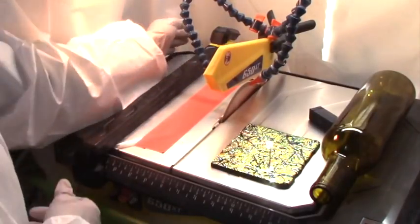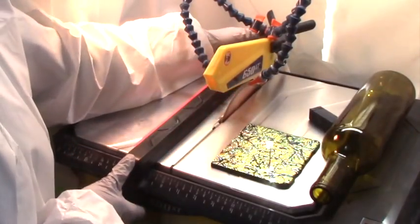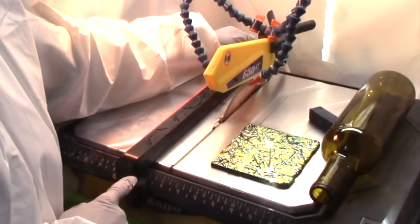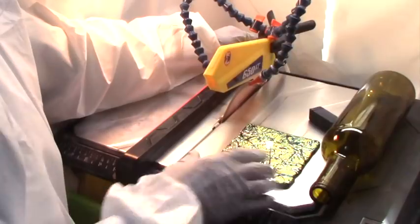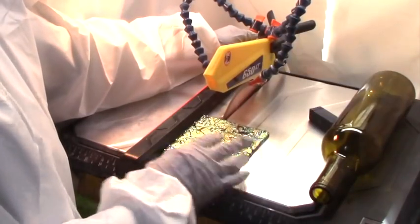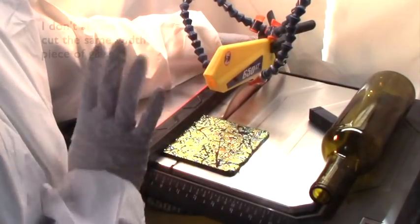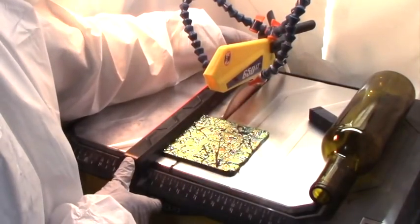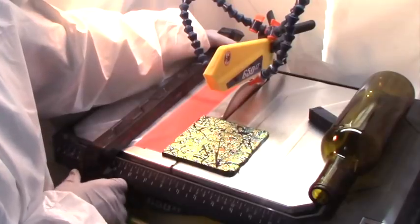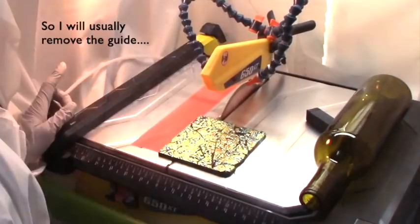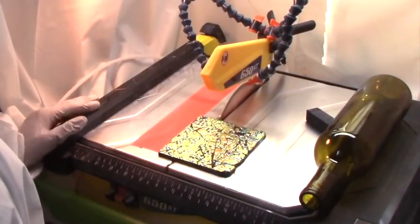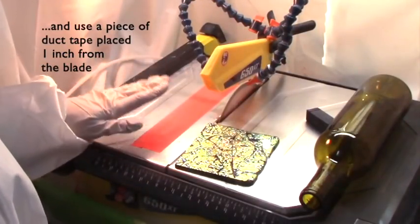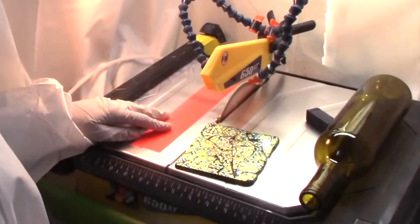The next thing about this saw is it comes with a guide. You can move the guide up here right where you want it. It's got a nice measuring tape down here. But I don't always cut the same width piece of glass, and I don't want to constantly be moving this, so I generally take this off or at least move it to the side.